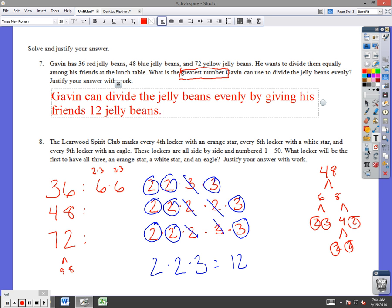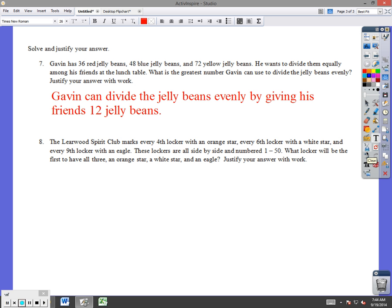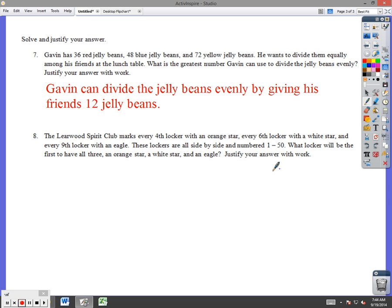Let's take a look at the last one. The Learwood Spirit Club marks every 4th locker with an orange star, every 6th with a white star, and every 9th with an eagle. These lockers are all side by side and numbered 1 through 50. What locker will be the first to have all three? An orange, a white, and an eagle. Now, notice, boys and girls, your answer can't be anything greater than 50 because that's how the lockers go up to. So, we have 4, 6, and 9. If I think about that, so the 4th locker has the orange star. The 6th locker has a white star. The 9th locker has an eagle. That means the 8th one also has an orange star. The 12th one also has a white star. And the 18th one also has an eagle. Looks like we're doing multiples, so we're doing least common multiples.